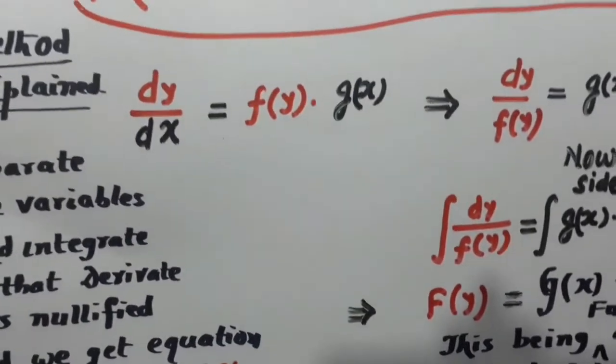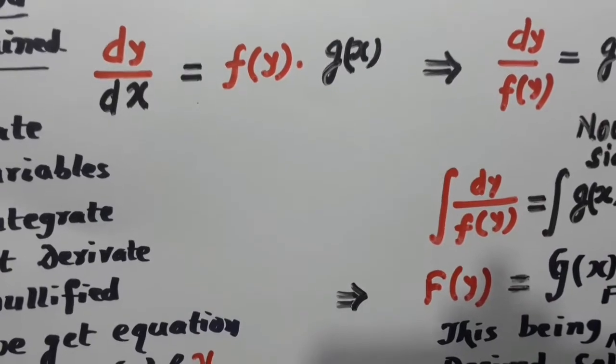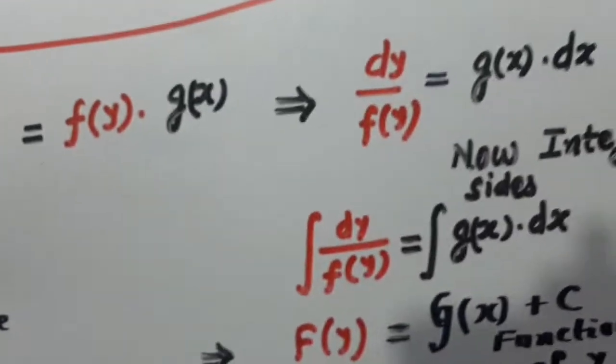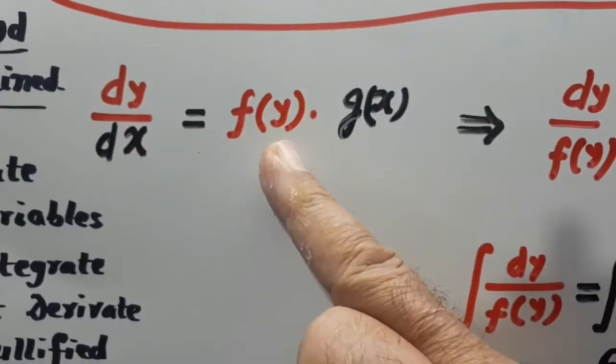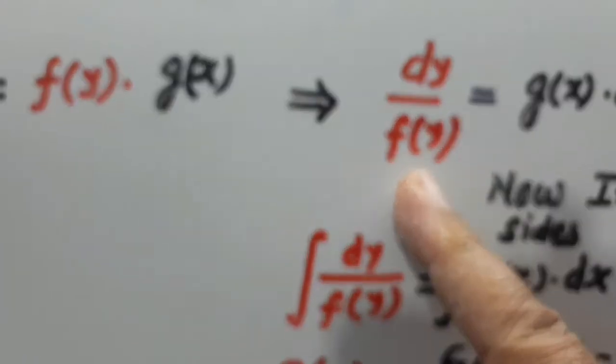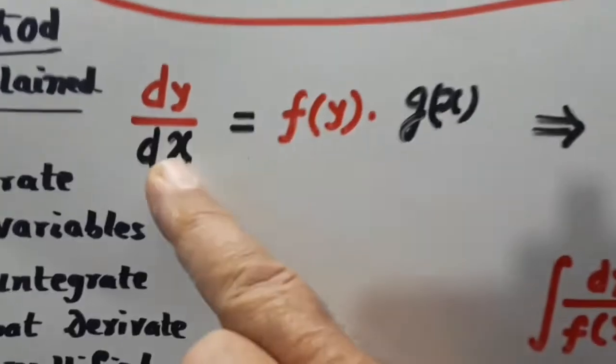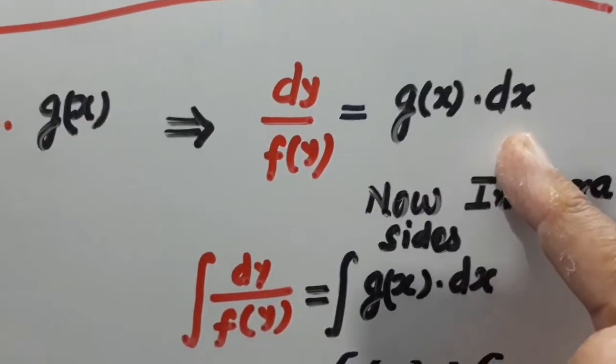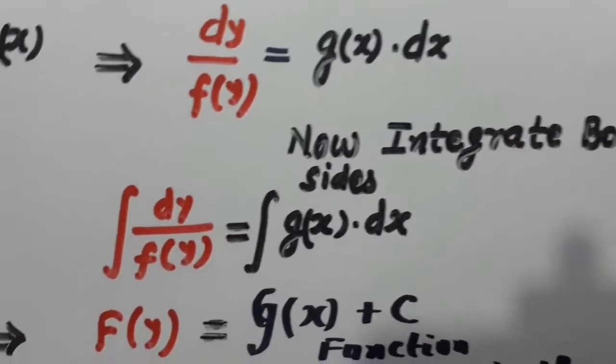Now, look here. I have written y in red colour and x in black colour. So I am separating this. There is dy, there is f(y). They will come on this side, and dx and g(x) will come on this side. Now, the variables have been separated.